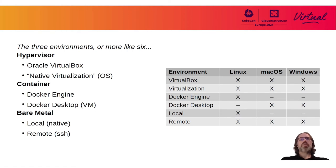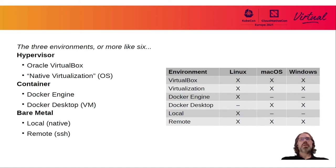These three environments can be further broken down into six different environments. For the hypervisor, we have the traditional Oracle VirtualBox external installation, but you can also run with the native virtualization of each operating system. For the container environment, we have the Docker engine running as processes in Linux, and the Docker Desktop environment which runs using virtual machines on Mac or Windows. For bare metal, you can either run it locally as traditionally done, or in the latest version of Minikube we can even run a remote cluster, where the actual cluster resides on a different physical machine than your laptop.